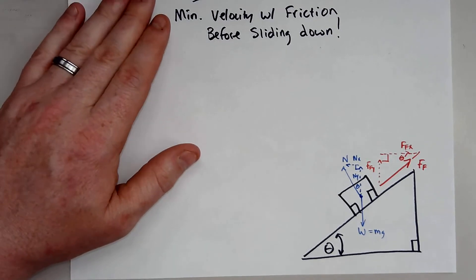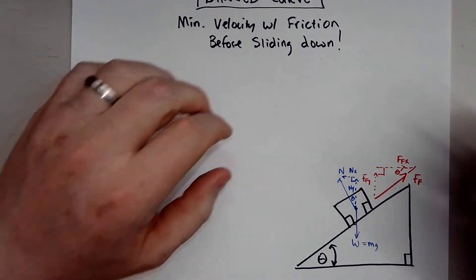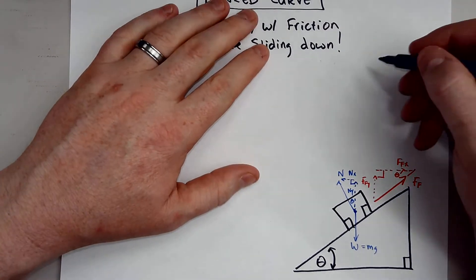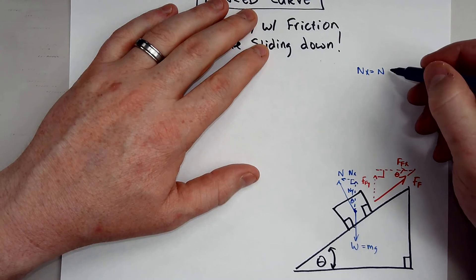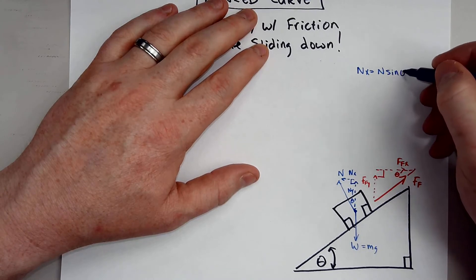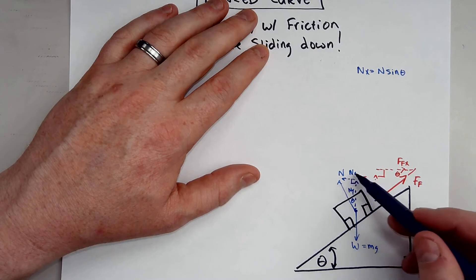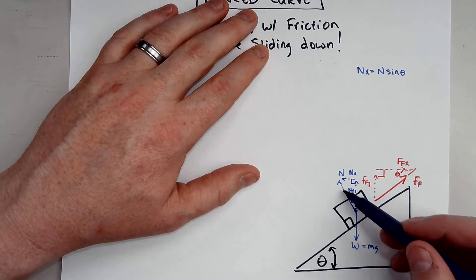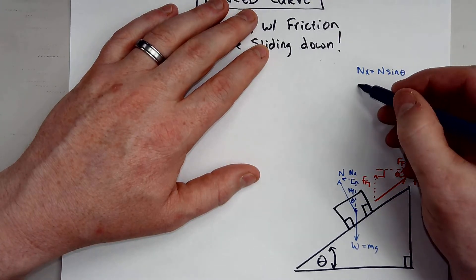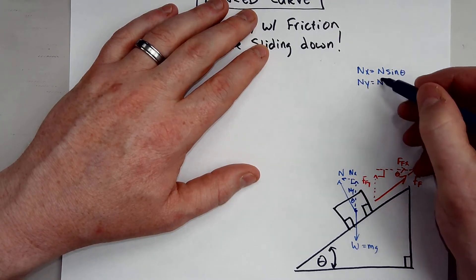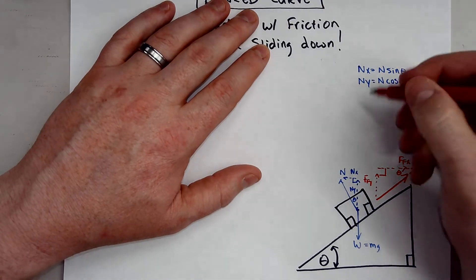Now we can solve for these components. The normal force in the x-direction is going to be N sine theta, because I have the opposite side in the x-direction and N is my hypotenuse. The y-direction component will be N cosine theta.